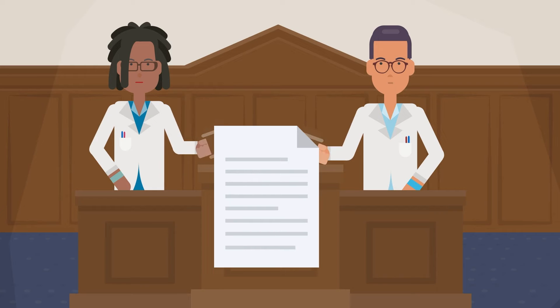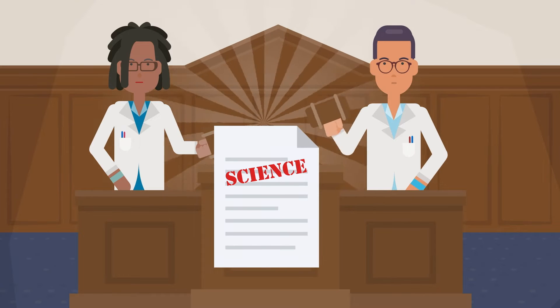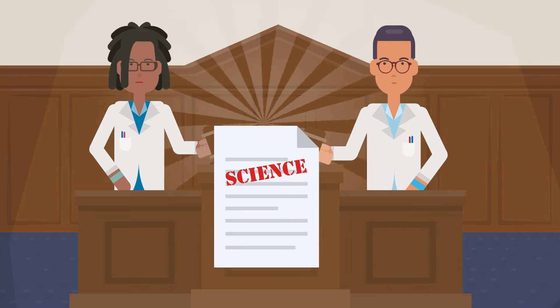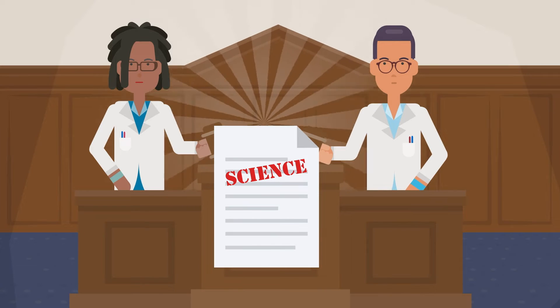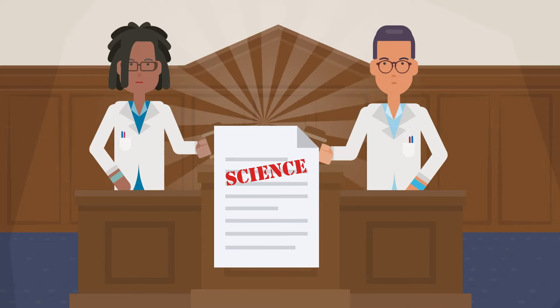Peer review is the sacred process by which a scientific paper is read by two to three other scientists, and those reviewers decide whether this paper is science or not science. Peer review has this reputation for being holy and mystical, but it's actually super, super mundane.